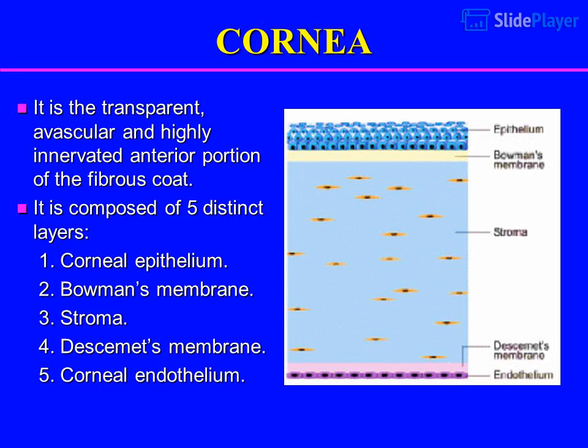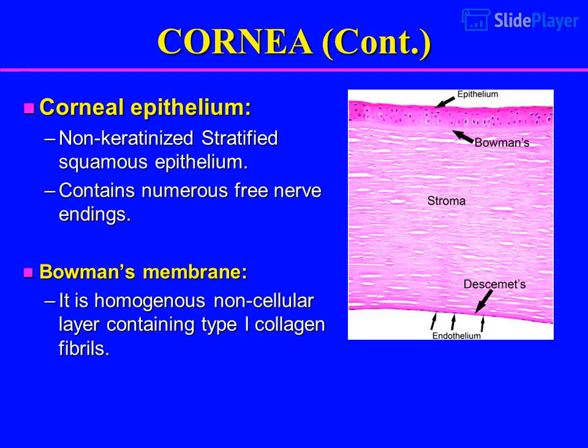The cornea is the transparent, avascular, and highly innervated anterior portion of the fibrous coat. It is composed of five distinct layers: 1. Corneal epithelium, 2. Bowman's membrane, 3. Stroma, 4. Descemet's membrane, 5. Corneal endothelium.